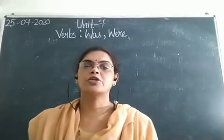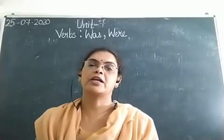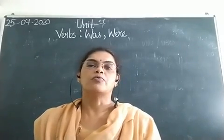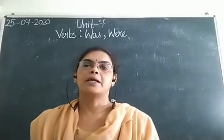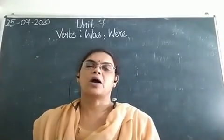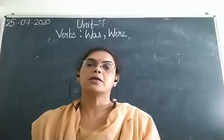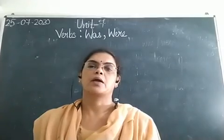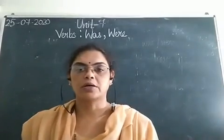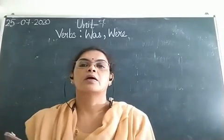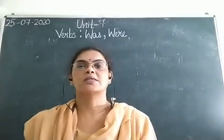Today I am going to continue with Unit 7 of your English Grammar book — Verbs: Was and Were. So all of you, please take out your English Grammar books and turn to page number 31. Page number 31, English Grammar book, Unit 7, Verbs: Was, Were.